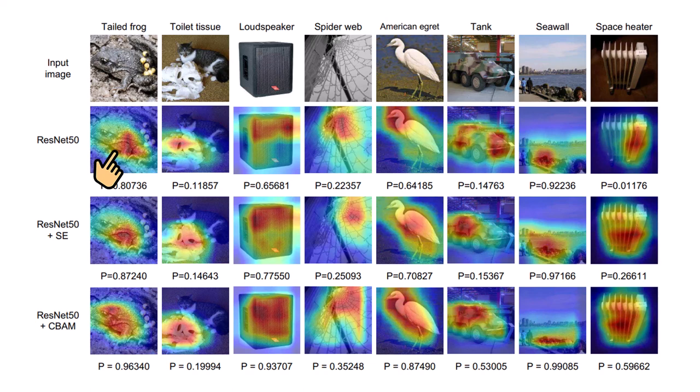But adding squeeze and excitation module, it performs almost the same, because it only focuses on the channel, not the spatial dimensions. But adding CBAM causes the model to kinda pay attention to the whole area of the object. And that's probably why CBAM achieves the best performance.